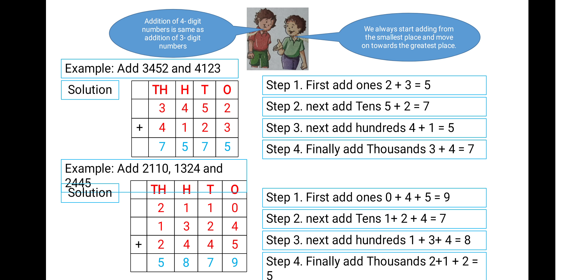In this picture, we can see a conversation between two boys. The first boy says that addition of four-digit numbers is the same as addition of three-digit numbers. Like three-digit addition is just the same as four-digit number addition. The second boy says: we always start adding from the smallest place and move on towards the greatest place.